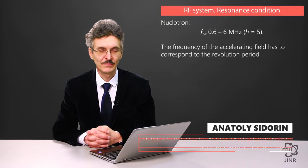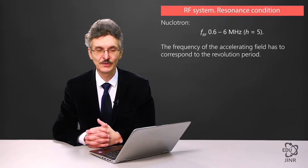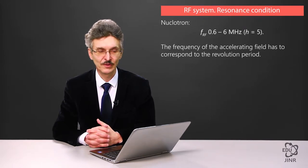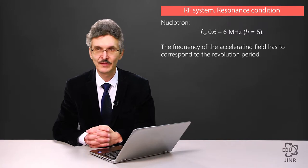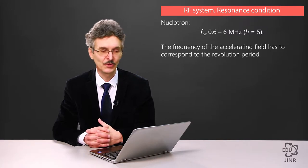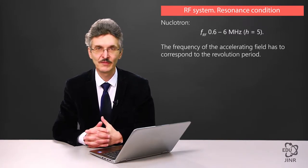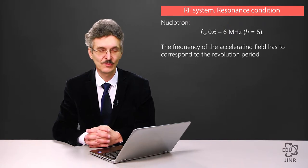Resonance systems can be illustrated using the nucleotron as an example. The frequency of the accelerating field at the nucleotron varies between 600 kHz and 6 MHz. It operates at the fifth harmonic of revolution frequency.